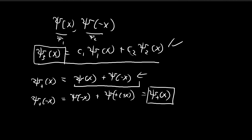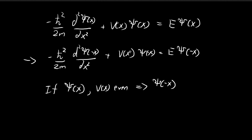Because of this rule, ξ₊(x) is also a solution to the time-independent Schrödinger equation. So we have proved that we can always construct an even function that is a solution, given that the potential is also an even function.